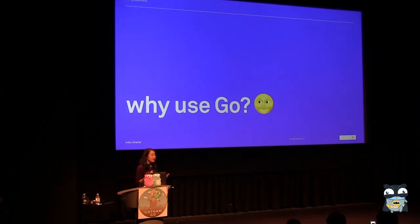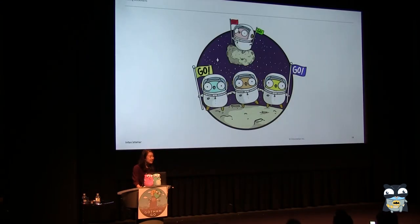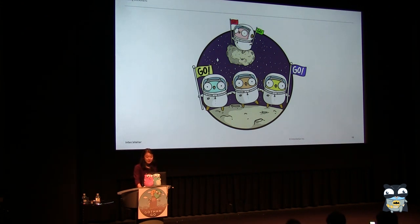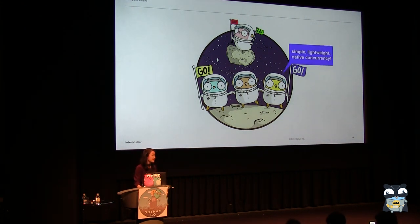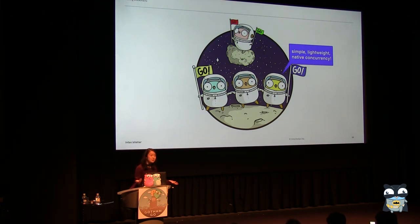Another question might be, why should we use Go? For us at Interstellar, there are a couple of reasons we love using Go for blockchain development. One of the most important is simple, lightweight native concurrency. This is super important when we're talking about services that need to be watching for transactions on the network, submitting transactions, and responding to messages.